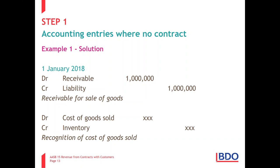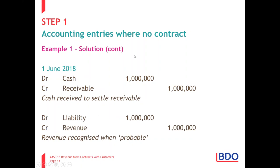Then on 1 June, they pay us. We debit cash and credit the receivable — they no longer owe us the money. And that liability can now be transferred to revenue because it's now probable we'll receive the cash — we've actually received it. Note that between 1 January and 1 June, we continually reassess to determine whether we meet the six criteria for a contract. It could have been that in March or April we already thought it was probable, at which point we would have debited the liability and credited revenue.